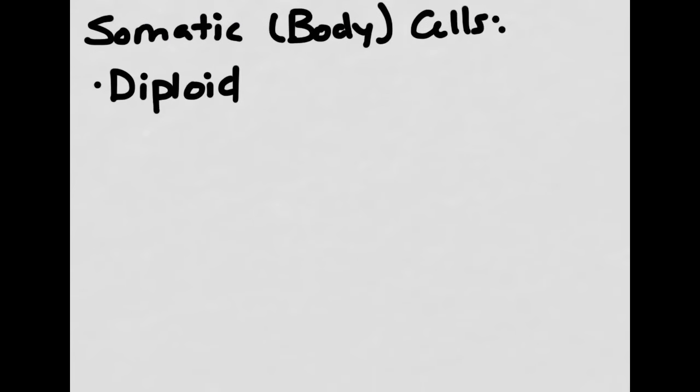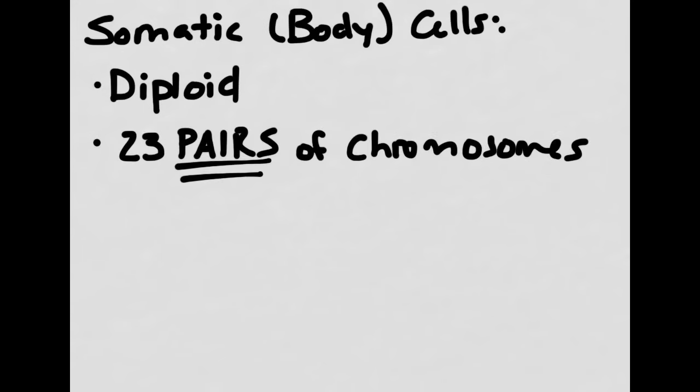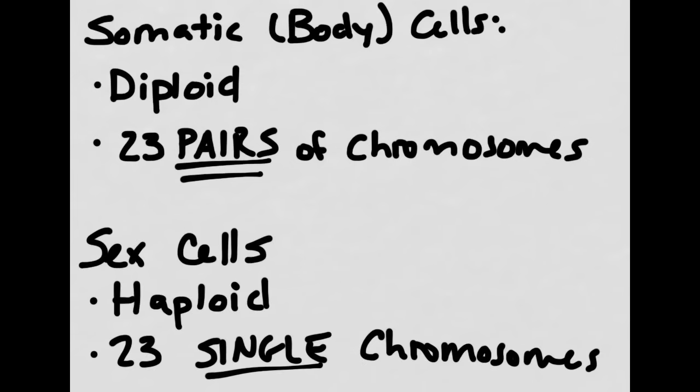Somatic or body cells are diploid. Diploid means that they have 23 pairs of chromosomes. This is different from sex cells like sperm and eggs, because sex cells are haploid. They have 23 single chromosomes, rather than having 23 pairs. This means that body cells have a total of 46 chromosomes, whereas sex cells have a total of 23.